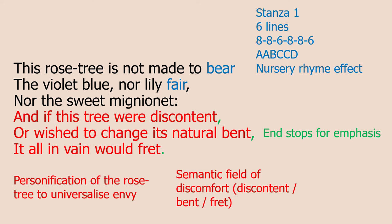I want to draw your attention to the last word in lines four, five, and six. Those words are 'discontent,' 'bent,' and 'fret.' All of these words are linked by the idea of being uncomfortable. If you are content, it means you are happy — so if you're discontent, it means you're unhappy, quite uncomfortable. If you're bent, it could mean physically you have been twisted out of shape — quite an uncomfortable idea. And if you fret, it means you worry a lot or you're anxious — again, not a comfortable state of being. So I think these three words, when used together, form a semantic field. They're all linked by the theme of discomfort, and I think Lamb uses this semantic field to drive home her message that envy is uncomfortable and bad for you.